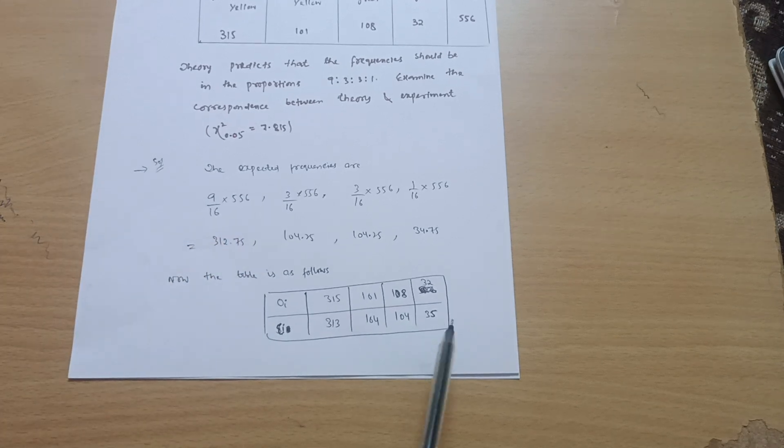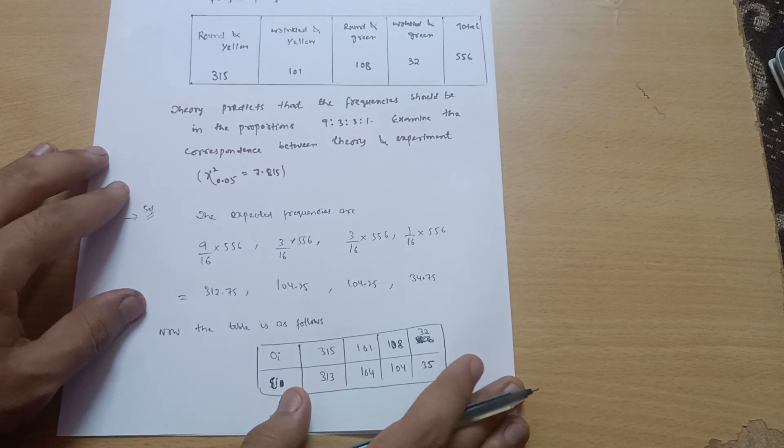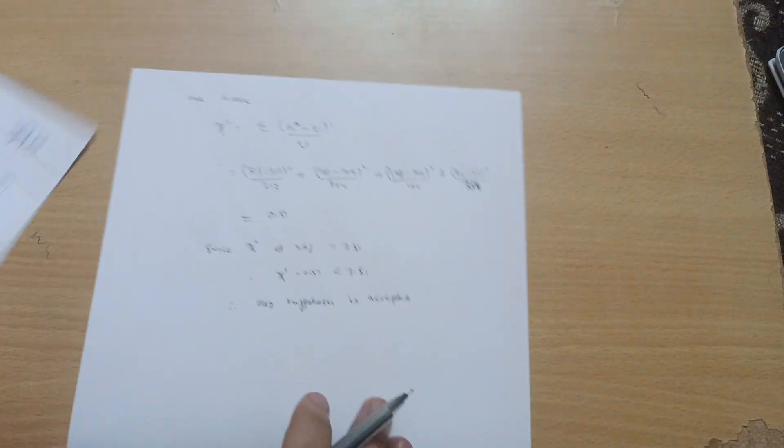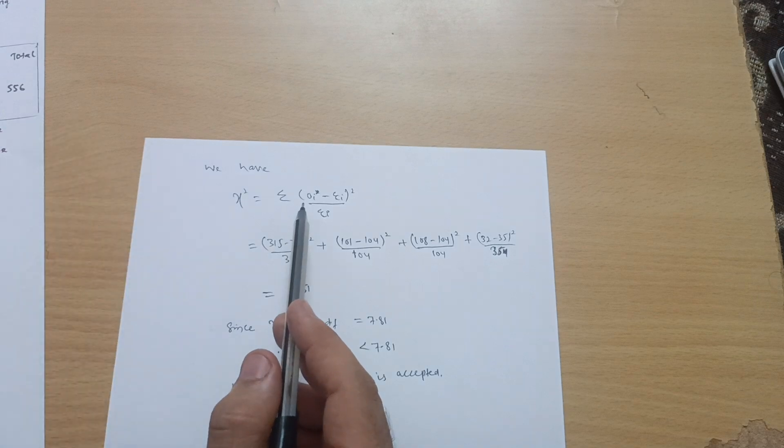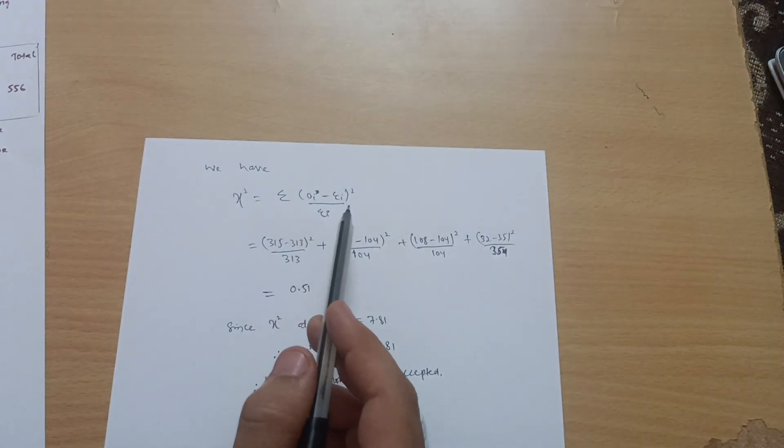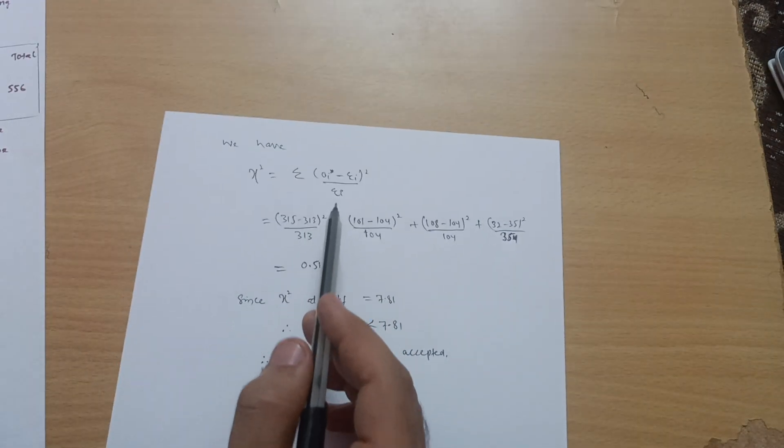So this is the value. Now you have to use the formula as usual in the chi-square distribution. We have chi-square is equal to summation of (Oi minus Ei) squared divided by Ei.